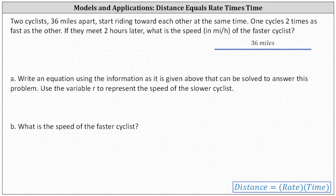Part A, we're asked to write an equation from the information and use R to represent the speed or rate of the slower cyclist. And then part B, determine the speed or rate of the faster cyclist.